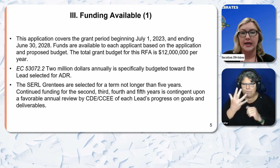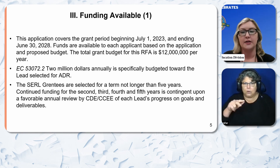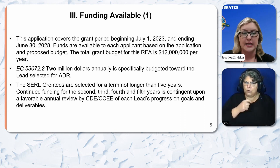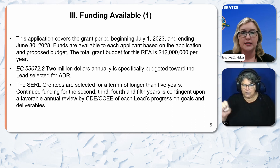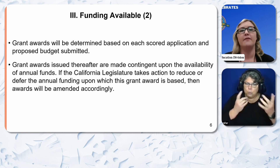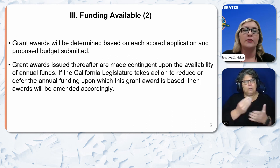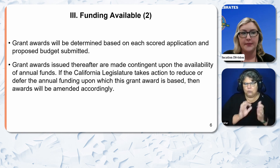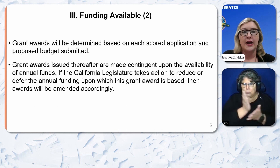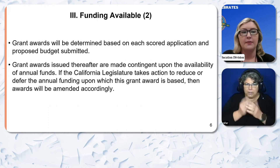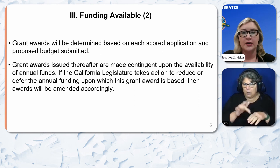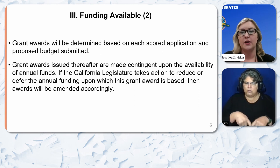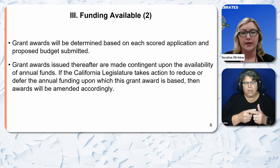Continued funding for the second, third, fourth, and fifth years is contingent upon a favorable annual review by CDE/CCEE of each lead's progress on goals and deliverables. Grant awards will be determined based on each scored application and proposed budget submitted. If the California legislature takes action to reduce or defer the annual funding upon which this grant award is based, then awards will be amended accordingly.